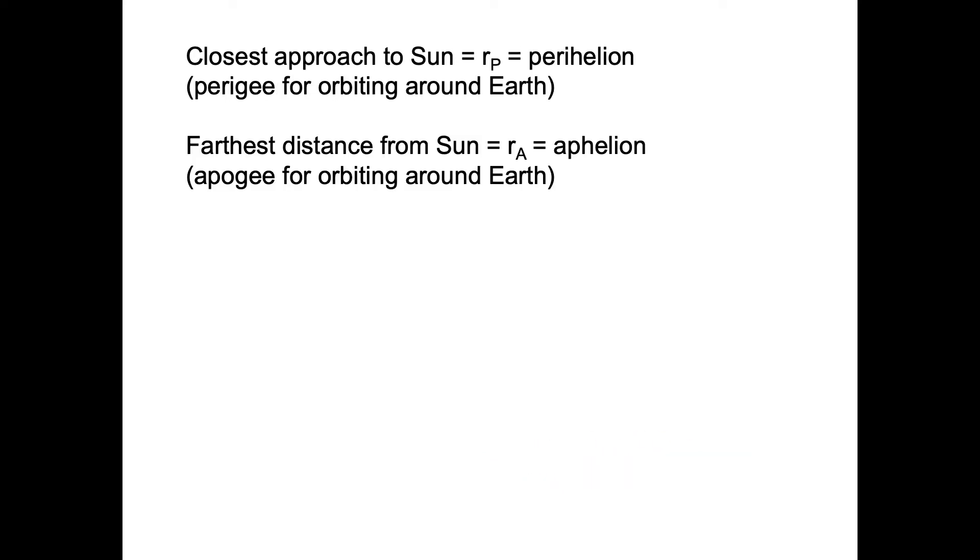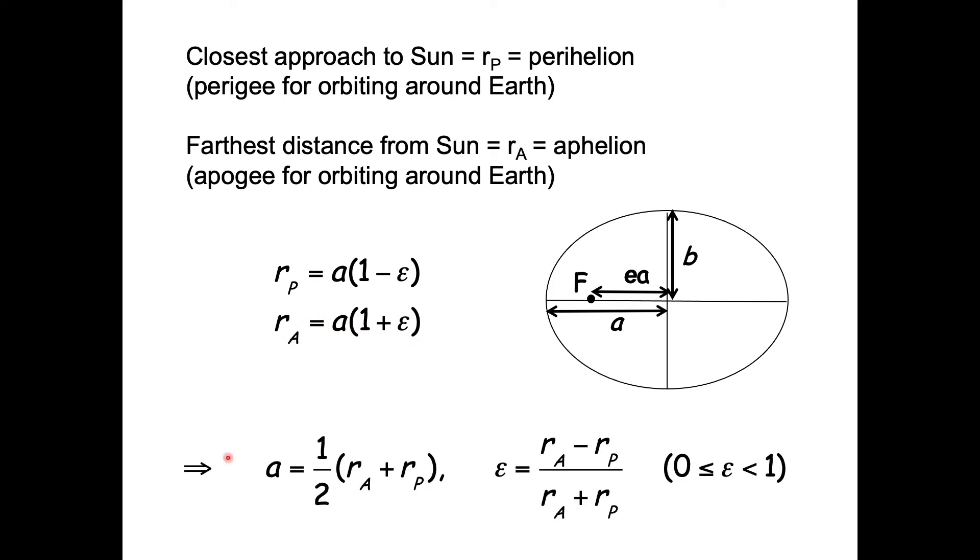The closest point of approach to the sun is the perihelion RP, the perigee for orbiting around the earth. The furthest distance from the sun RA is the aphelion, apogee for orbiting around the earth. RP equals A times 1 minus the eccentricity, and RA equals A times 1 plus the eccentricity. We have A equals one half RA plus RP, and the eccentricity equals RA minus RP over RA plus RP.